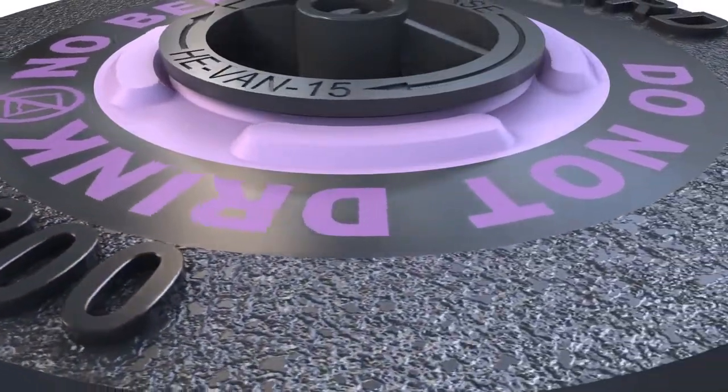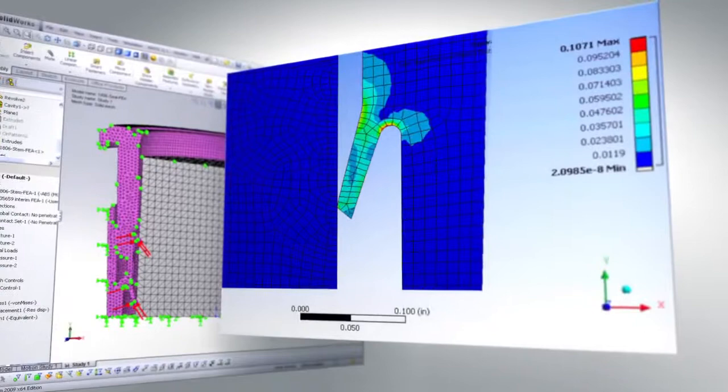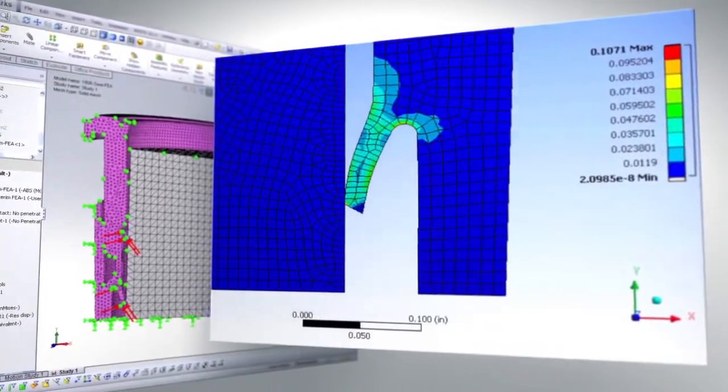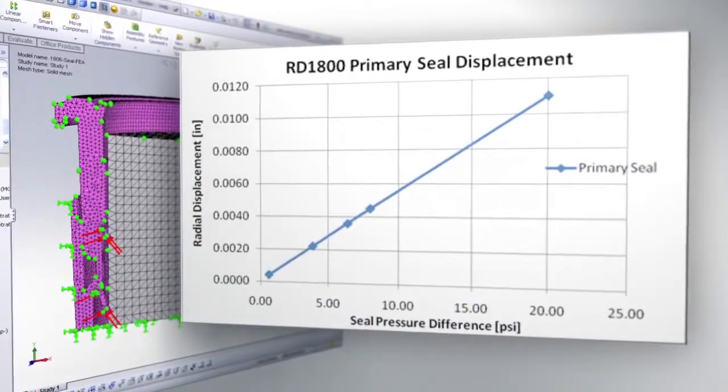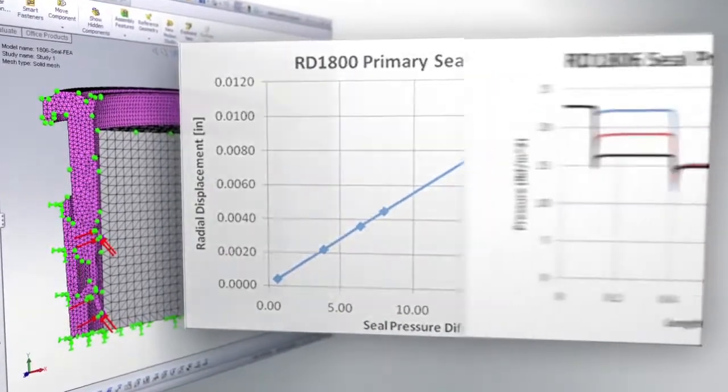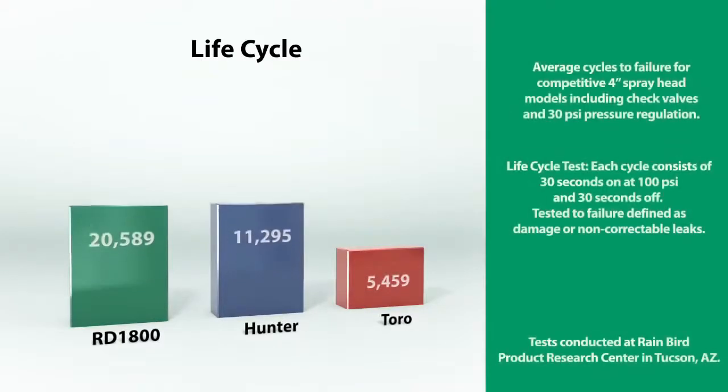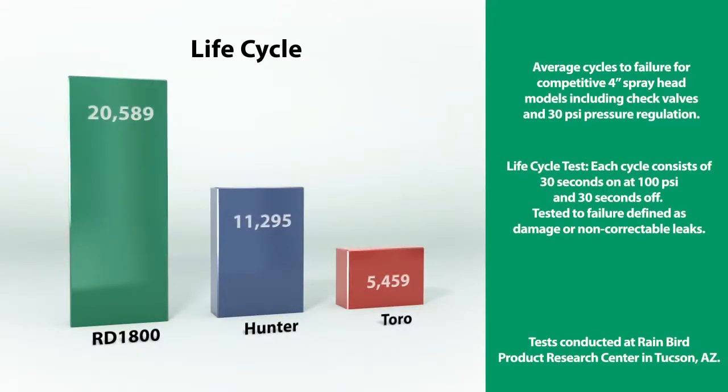But actions speak louder than words. Engineered using the most advanced modeling software, the RD1800's impact-resistant cover and body stand up to vandalism while also resisting damage in high-pressure applications. For proof, here's how the RD1800 outperforms the competition in comparison testing.